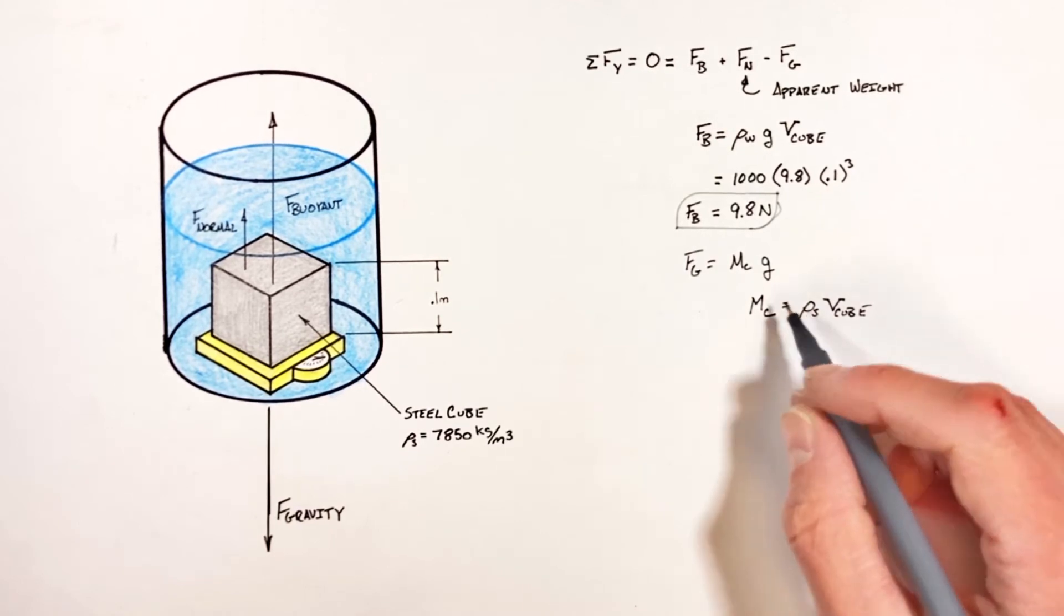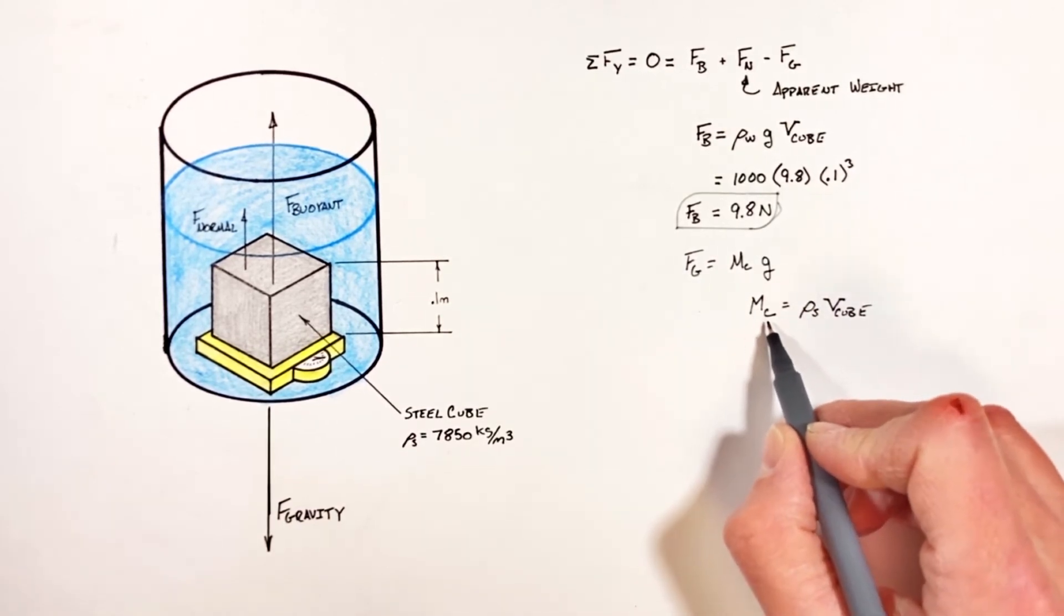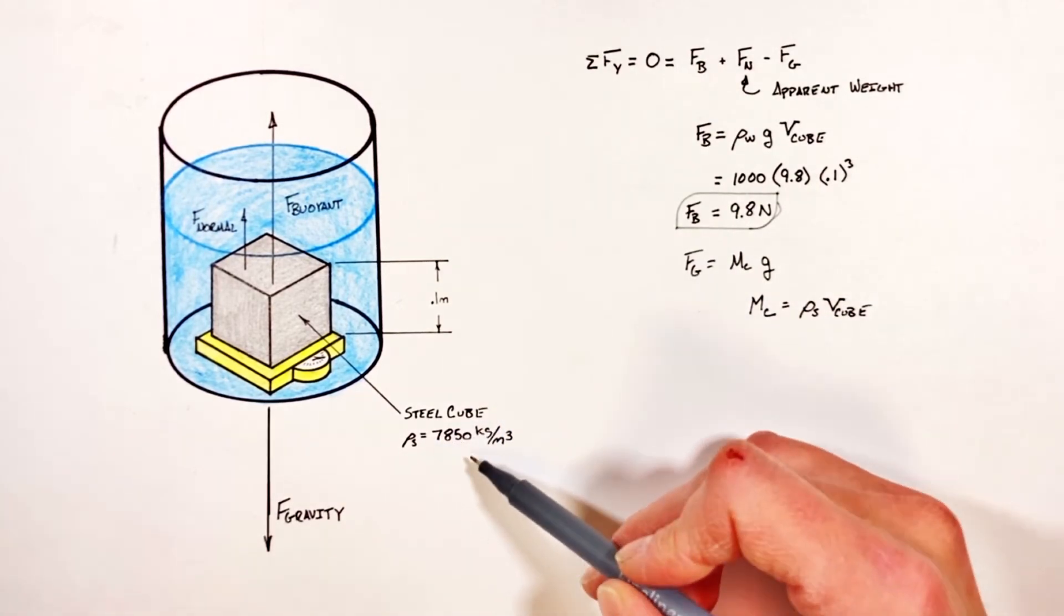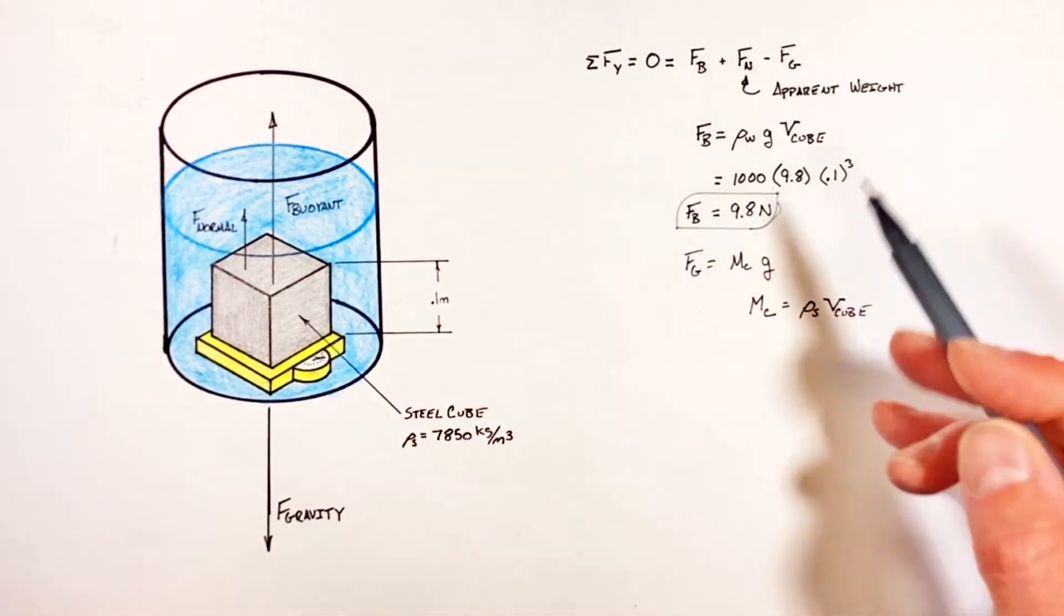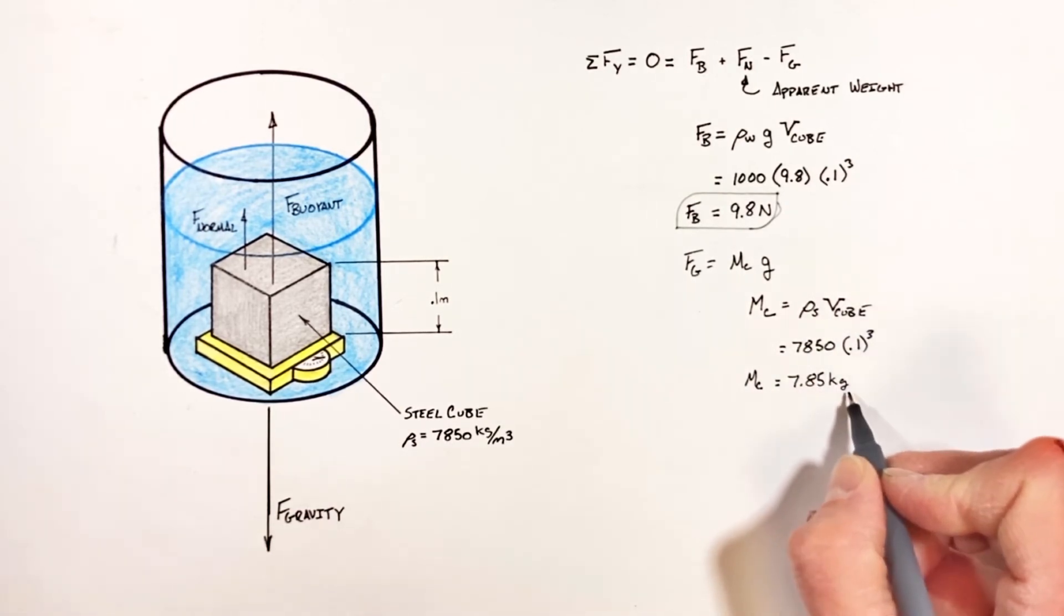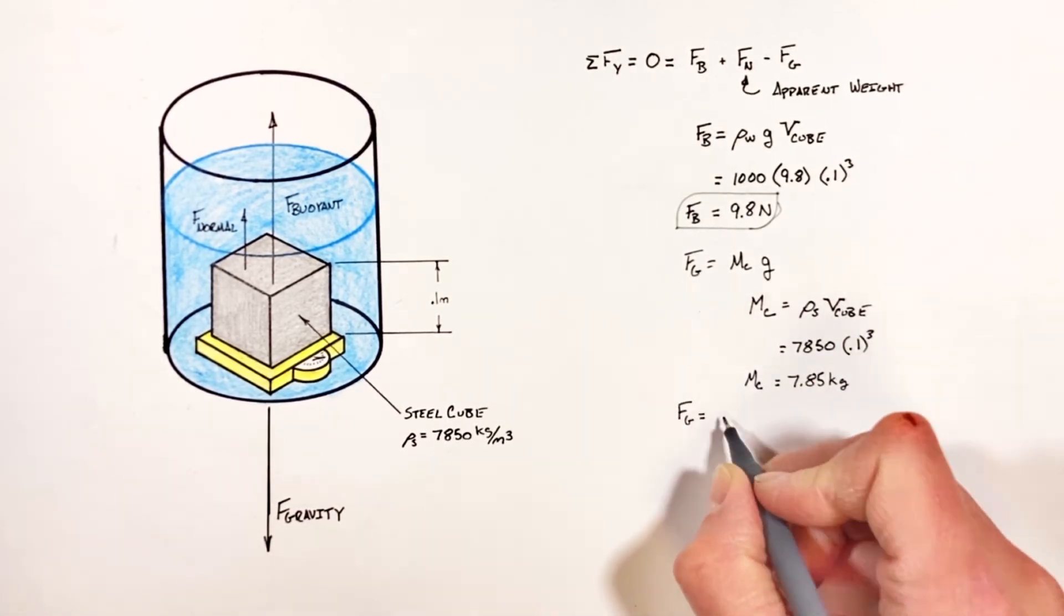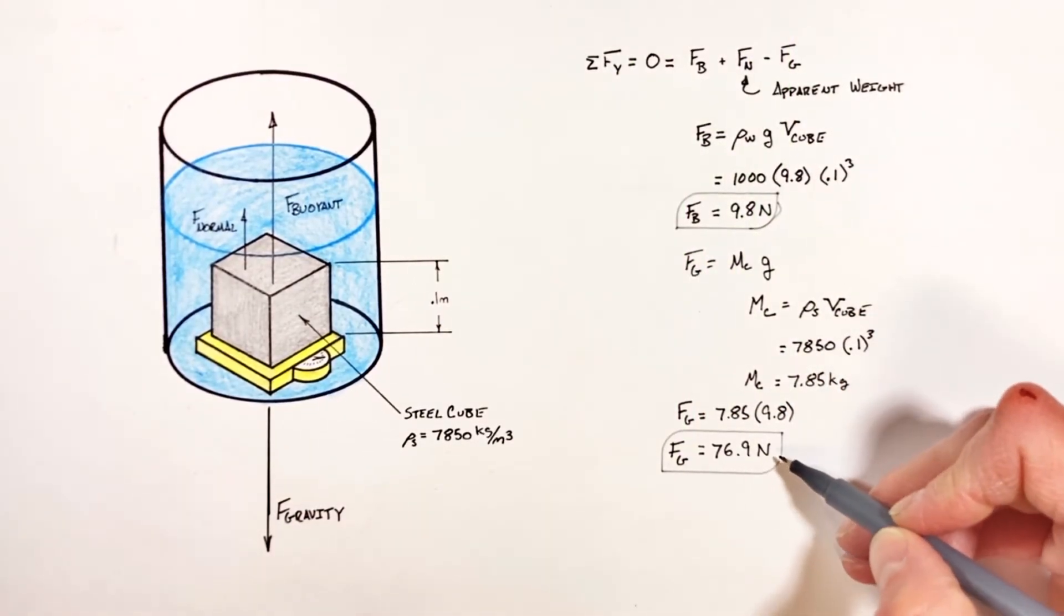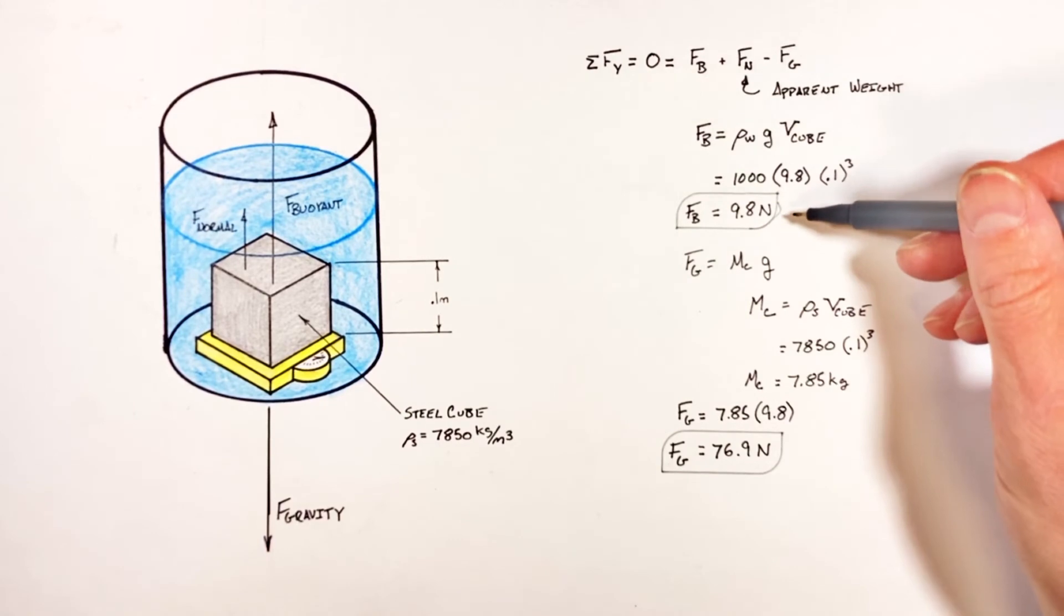It's important to be careful here. Since we're solving for the mass of the cube, when using our density formula we need to use the density of the steel, not the density of the water. So we find the mass of the cube is 7.85 kilograms, which means the total weight of the cube is 76.9 newtons.